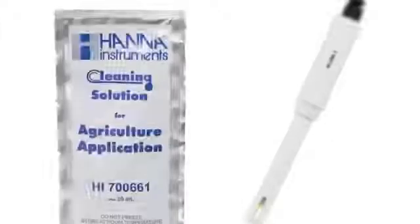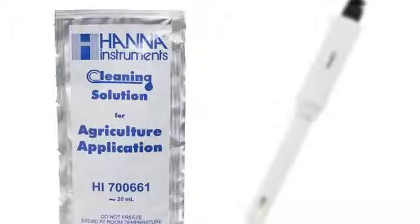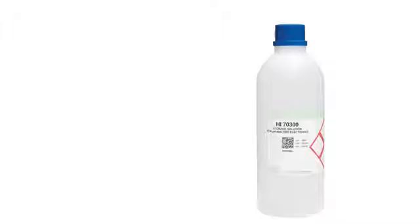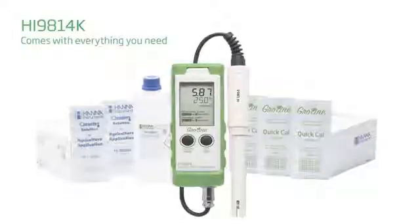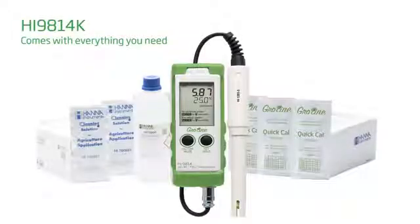It is important to periodically clean your probe and set a regular schedule for probe maintenance. To clean the probe, place the probe in the agricultural cleaning solution for 15 minutes. Rinse the probe with distilled or deionized water. Next, place in storage solution for at least two to three hours. Calibration is necessary before taking any measurements.